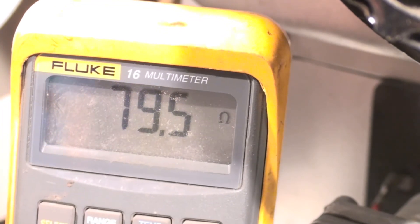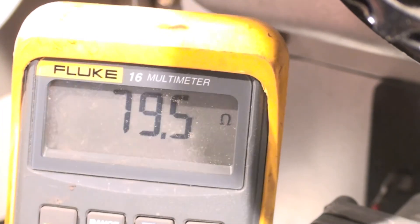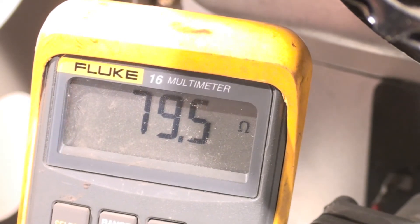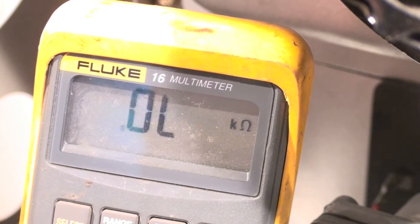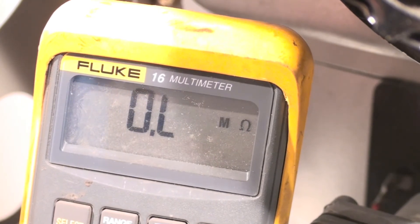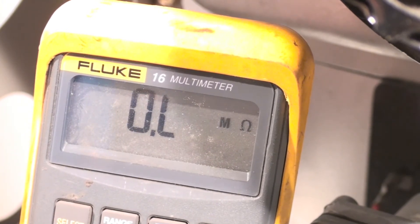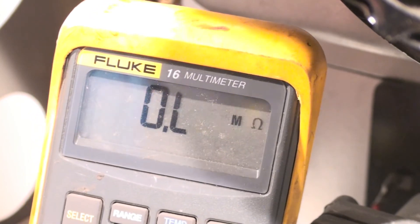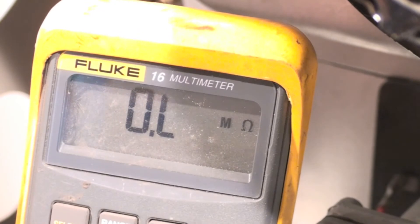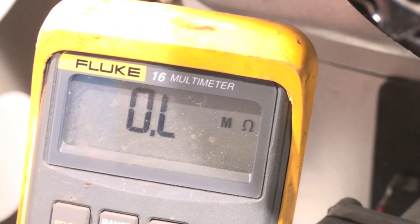If it was running 150 or higher, we would probably consider replacing. That's not a real accurate number, but it's a number we usually use on these things. Now if it read OL, that means the hot surface igniter has failed and the furnace is not going to light.